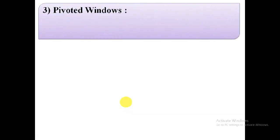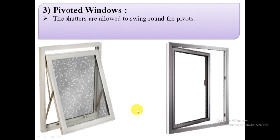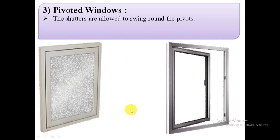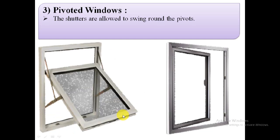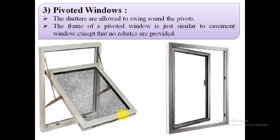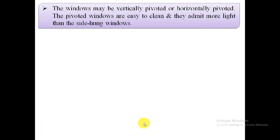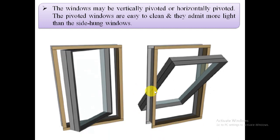The next type is pivoted windows. The shutters of pivoted windows are allowed to swing round the pivot. The frame of a pivoted window is similar to a casement window except that no rebates are provided. Pivoted windows may be vertically pivoted or horizontally pivoted. They are easy to clean and admit more light than side-hung windows.